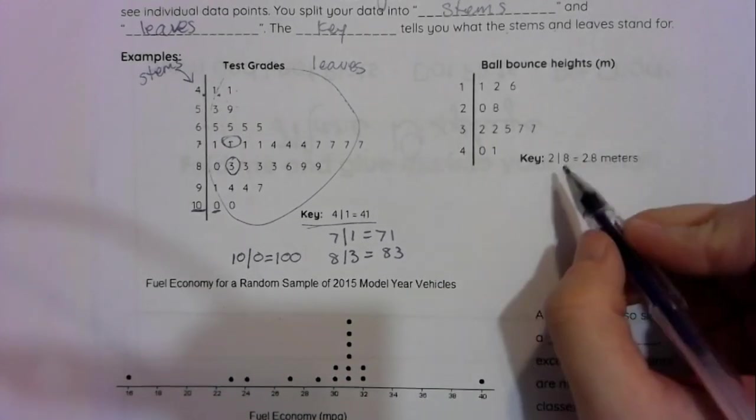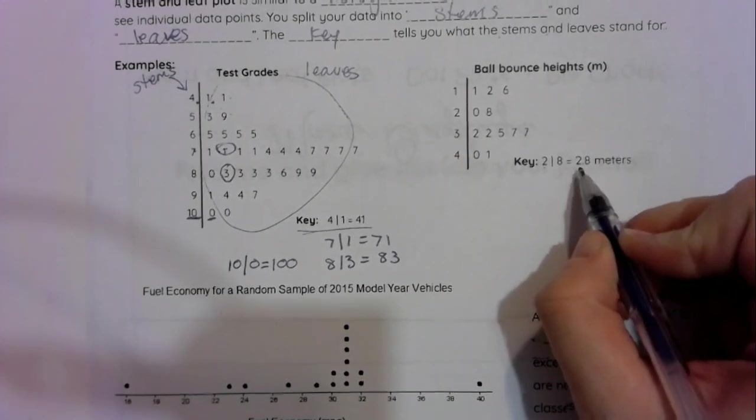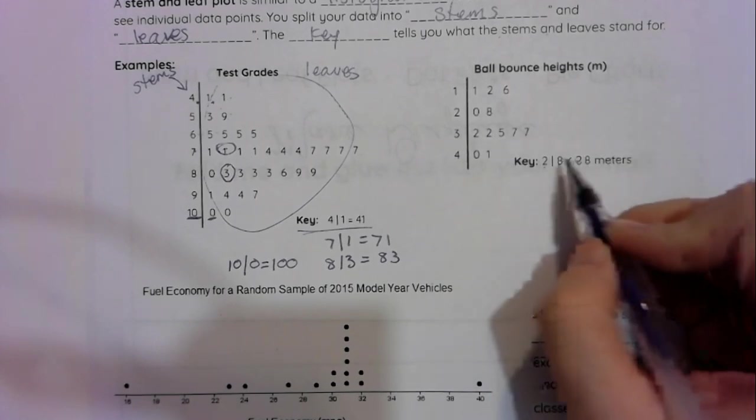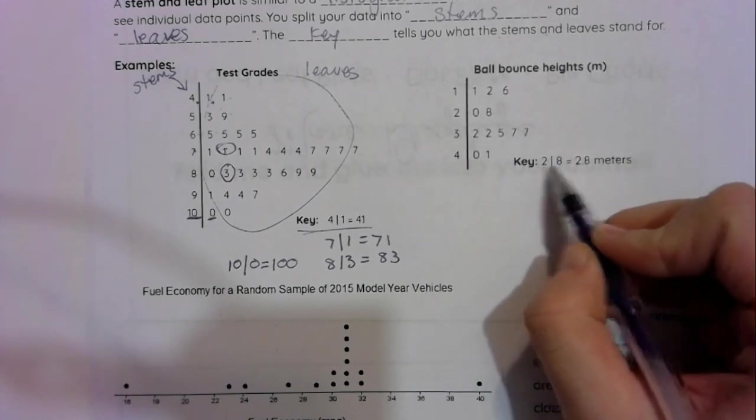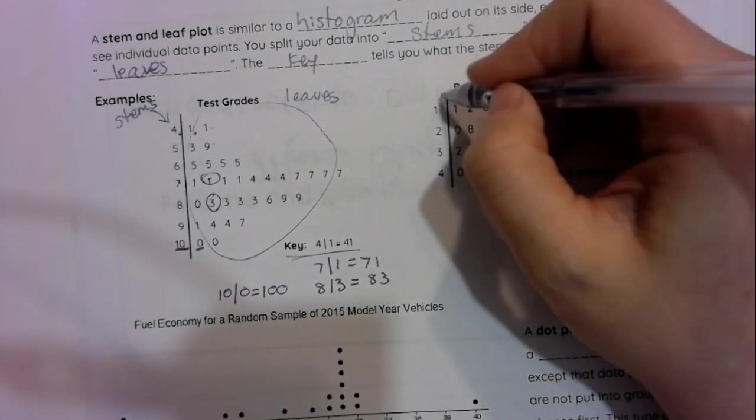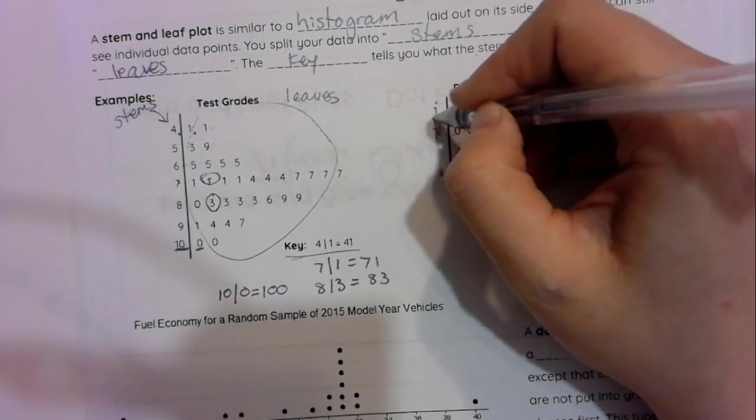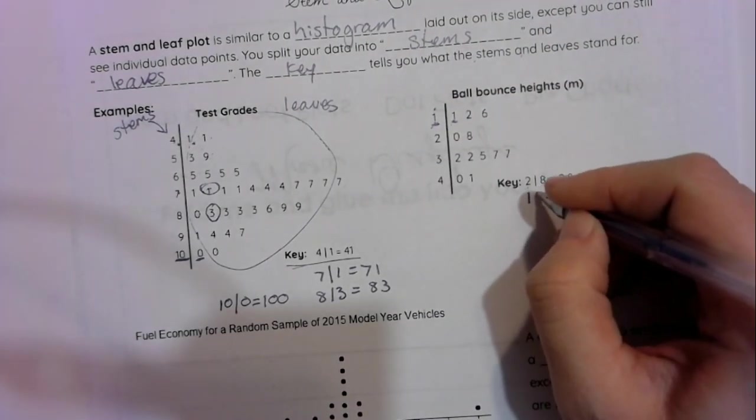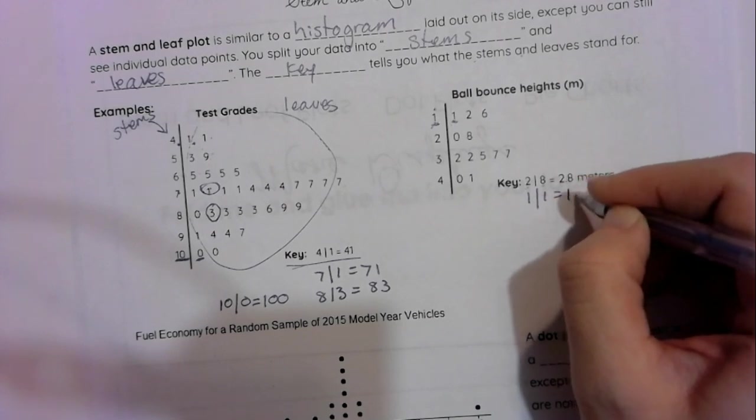And we got this example here where instead the stems are the ones place and the leaves are the tenths place. So the two stem and eight leaf would be 2.8 meters. For instance, if I had one as a stem and one as the leaf, that would be 1.1 meters.